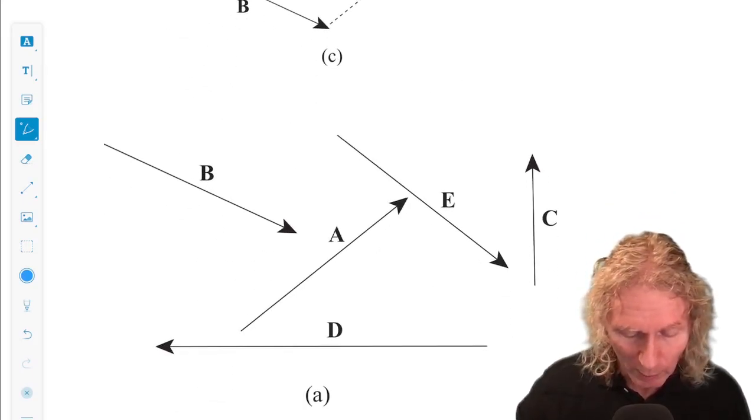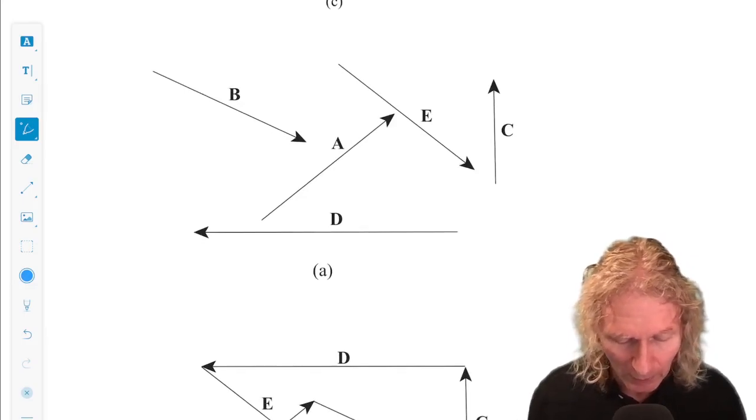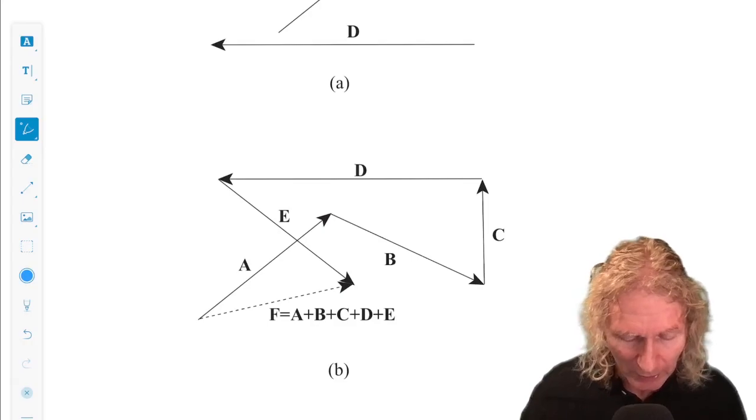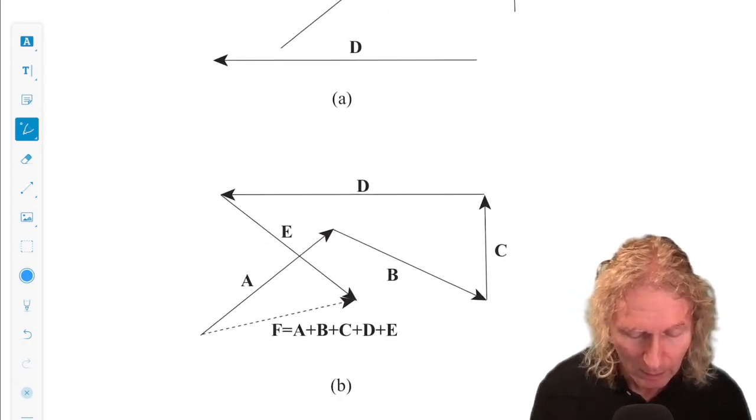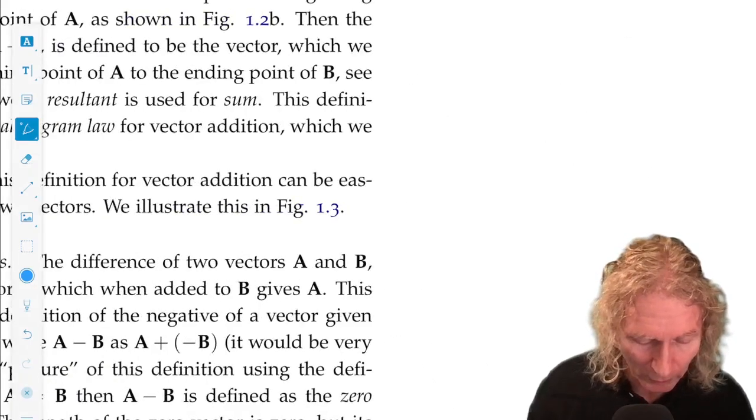And you can do this for any number of vectors. I'll let you work through this. I have five vectors here. And I add A plus B plus C plus D plus E and I get the dashed line below. And that's an exercise for you to try and you'll get more exercises.